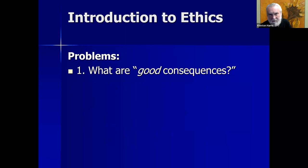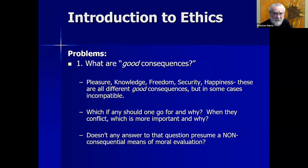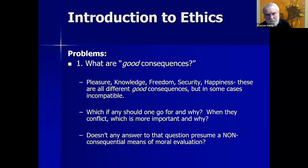The problems: what precisely are these alleged good consequences we should pursue? Notice: pleasure, knowledge, freedom, security, happiness — these are all different good consequences, but sometimes they're incompatible. In order to give you knowledge, I may have to tell you something very unpleasant to hear, so I can't maximize your pleasure and knowledge at the same time. Or to protect your security, I may have to reduce your freedom. When they conflict, which is more important, and why?